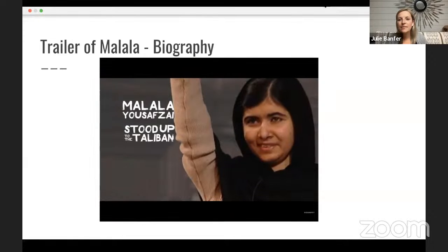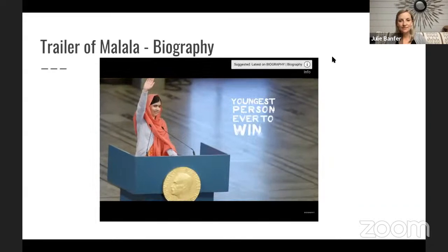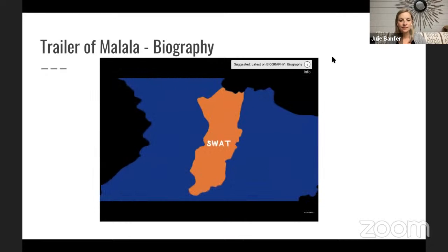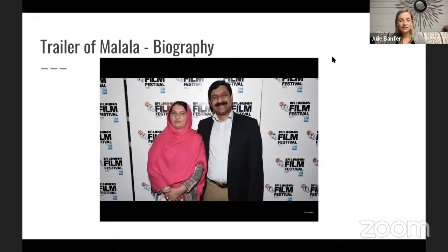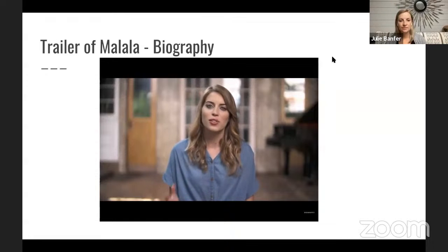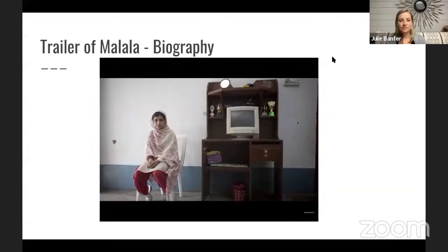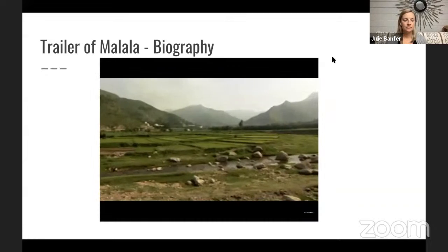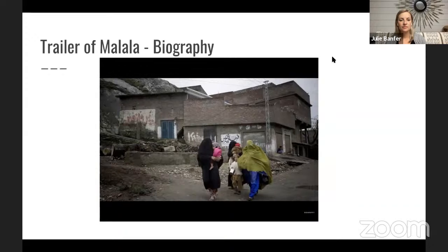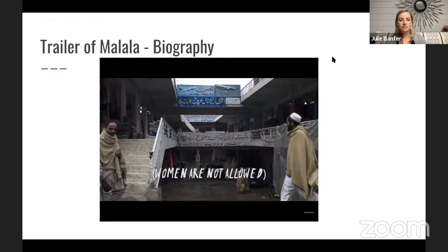An activist who stood up to the Taliban, survived an assassination attempt, and became the youngest person ever to win a Nobel Peace Prize — Malala Yousafzai was born on July 12, 1997 in the Swat region of Pakistan. Her parents were determined to give her every opportunity a son would have, starting with an education. But in 2007, when Malala was around 10 years old, the Swat Valley was taken over by the Taliban, and women were discouraged from getting an education.